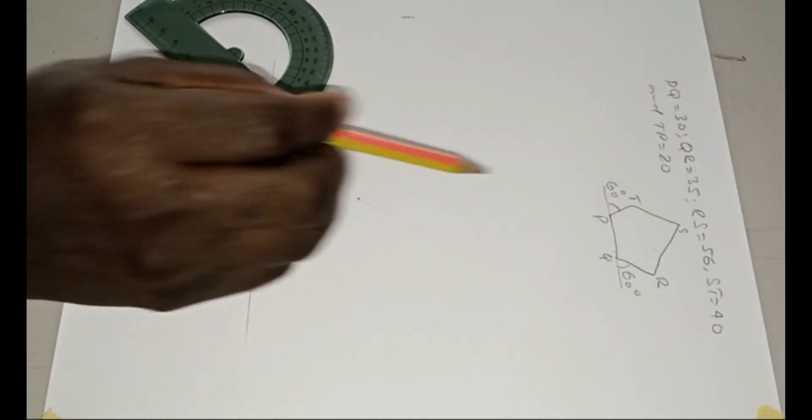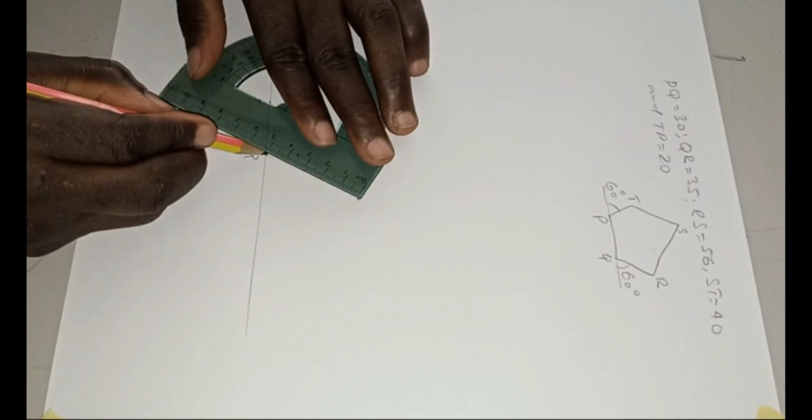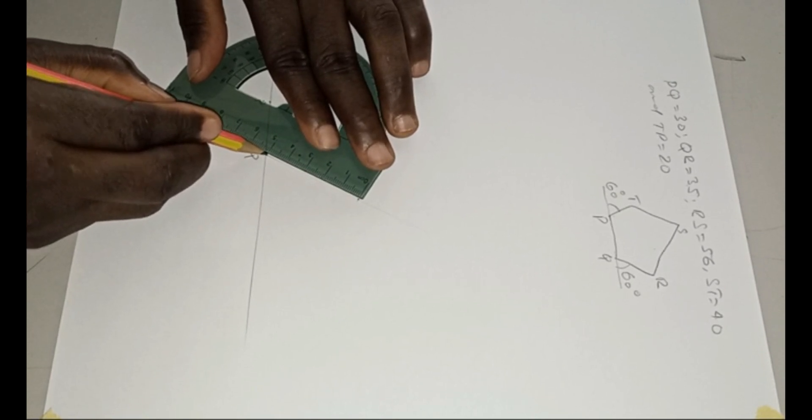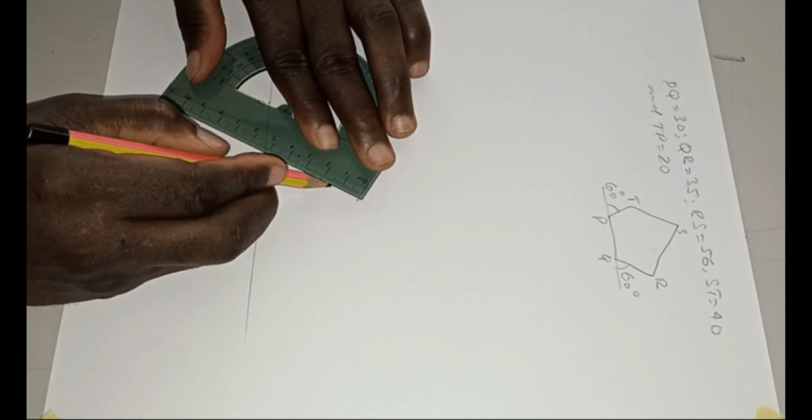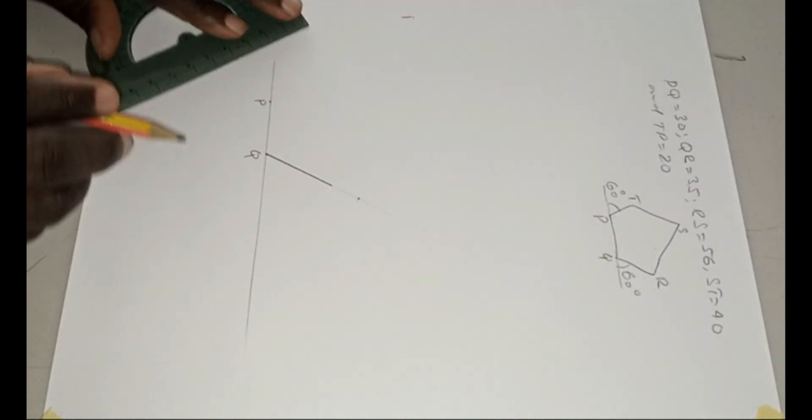And the length of QR is 35. So you measure 35: 10, 20, 30, this is 35. So it's kind of thick.